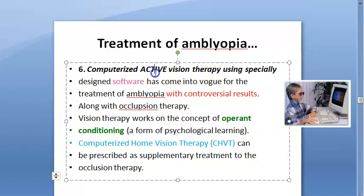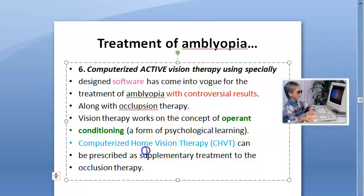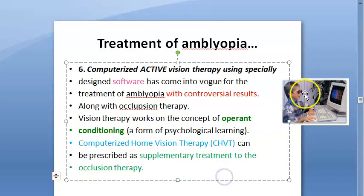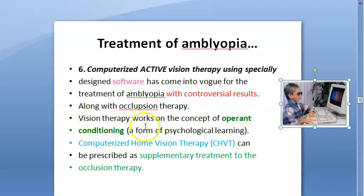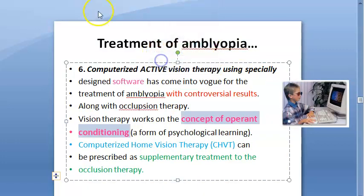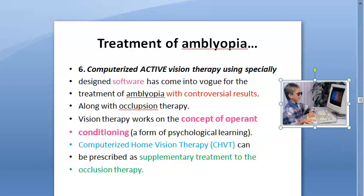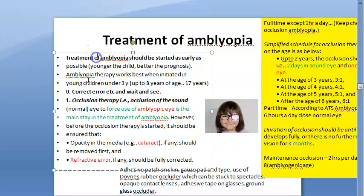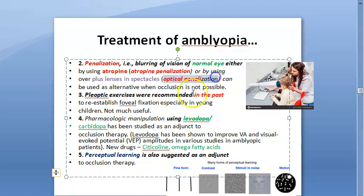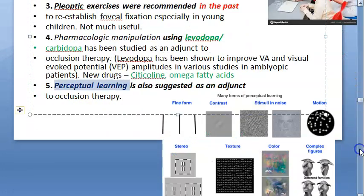Computerized active vision therapy (CHVT — computerized home vision therapy) uses special software, though results are controversial. It is a supplementary treatment to occlusion therapy. There is a concept of operant conditioning — a form of psychological learning — involved in this therapy.